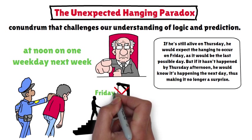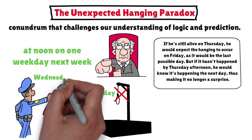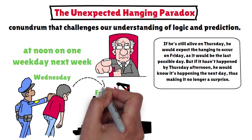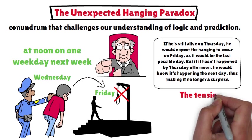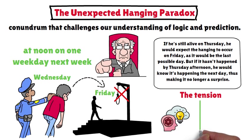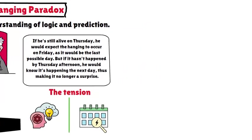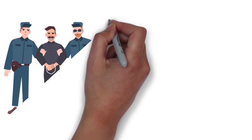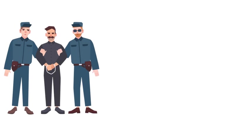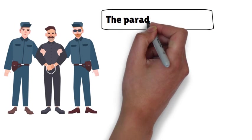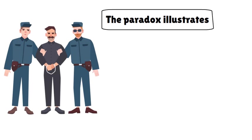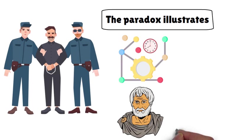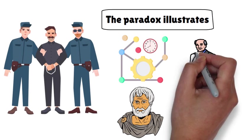Yet, the executioner arrives on Wednesday, surprising him. This paradox highlights the tension between logical reasoning and the unpredictability of real-world events. No matter how cleverly the convict deduces the situation, the unexpected arrival of the executioner defies his expectations. The paradox illustrates the limits of human reasoning and the complexities of time-bound scenarios, leaving us with a fascinating puzzle that continues to intrigue philosophers and academics alike.